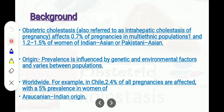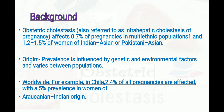The prevalence is influenced by genetic and environmental factors and varies between populations. Worldwide, for example in Chile, 2.4% of all pregnancies are affected, with a 5% prevalence in women of Asian Indian origin. Overall, obstetric cholestasis affects 0.7% of pregnancies.